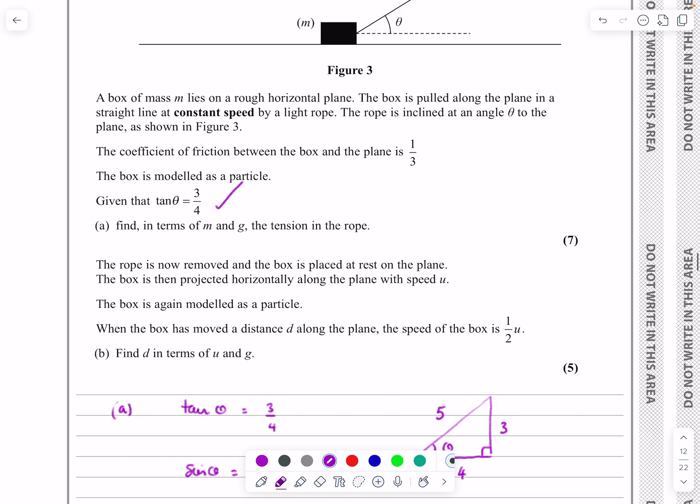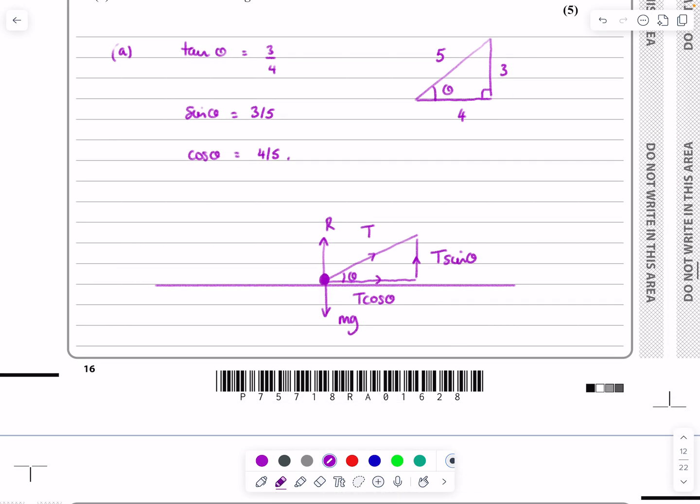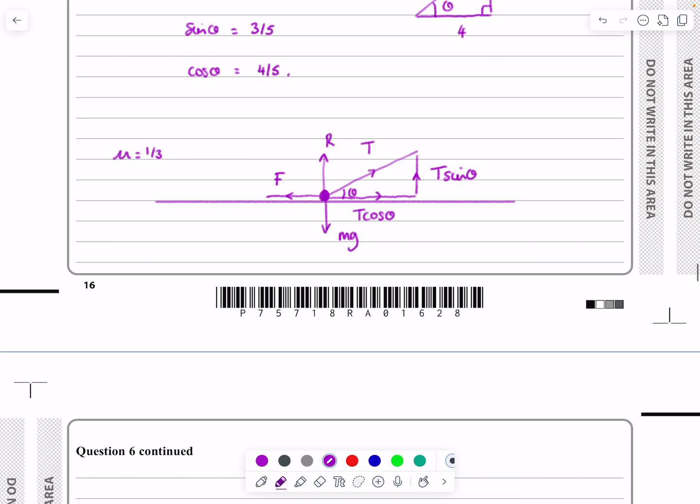It's in contact with the plane, so there's a reaction force, normal reaction. They told us we had the rope pulling up with a tension. If this angle equals theta, I want to know how much of that tension is vertical and horizontal. That's T sin theta and T cos theta. It's on a rough horizontal plane, so there'll be friction opposing motion. Mu equals one-third.